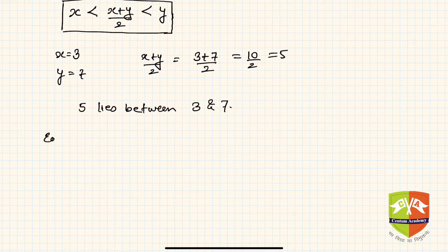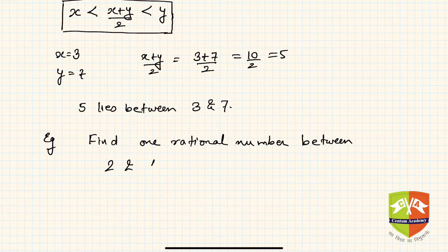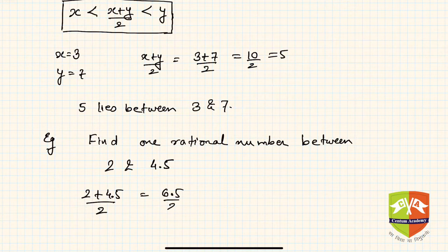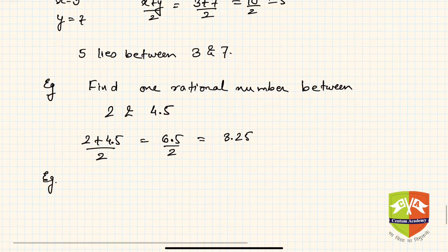Another example: find one rational number between 2 and 4.5. The solution is simply 2 plus 4.5 by 2, which is 6.5 by 2, which is 3.25. So clearly 3.25 is between 2 and 4.5.